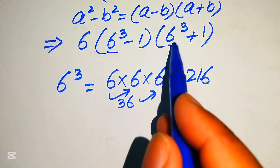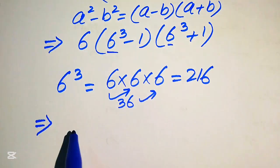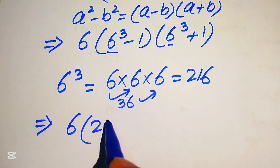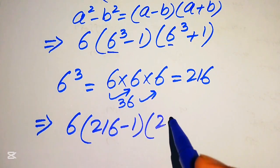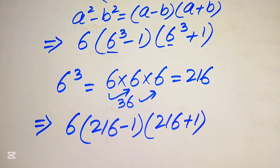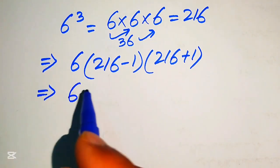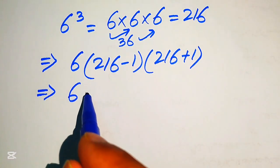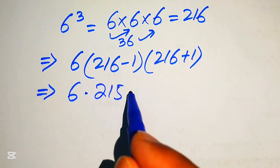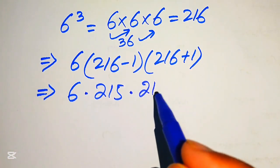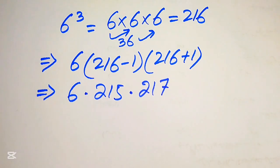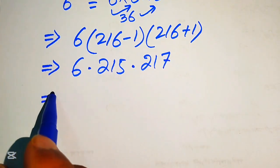We replace 6 cubed with 216 in both terms. After substituting, the expression becomes 6 times (216 minus 1) times (216 plus 1). Since the calculator is not allowed, we work step by step: 216 minus 1 equals 215, and 216 plus 1 equals 217.